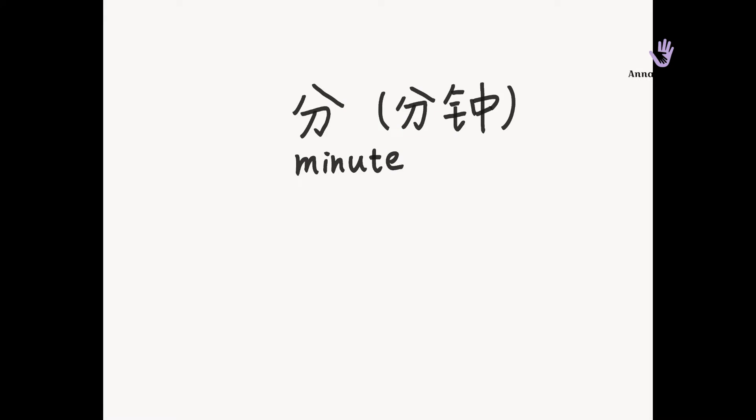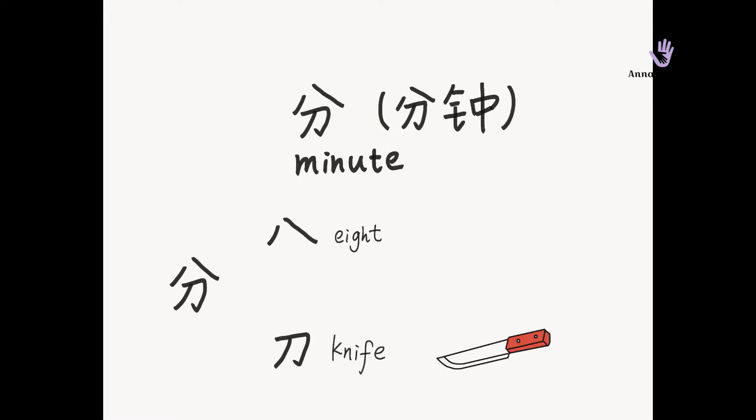Fen or fen zhong means minute. Please repeat: fen zhong, fen zhong, fen zhong. We can separate fen into two parts. The upper part is eight. The bottom part is dao, which means knife. We combine eight and knife and then we get minute. Fen zhong is very easy to remember, right?